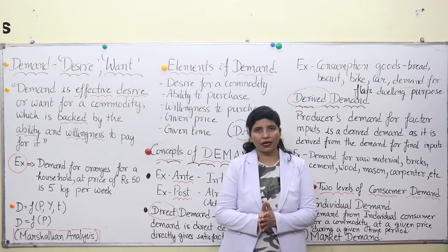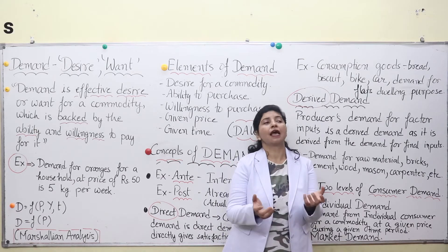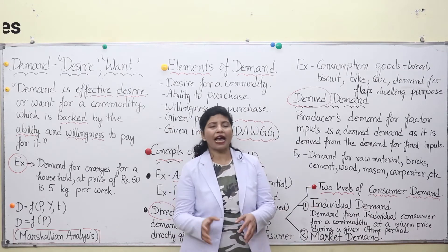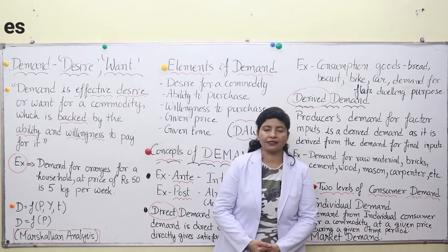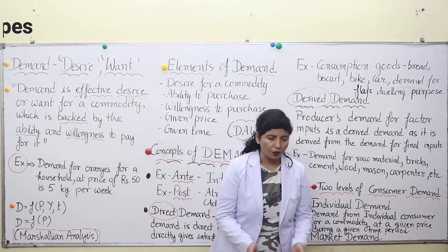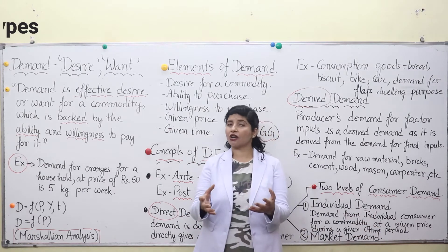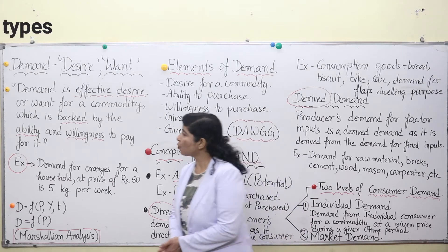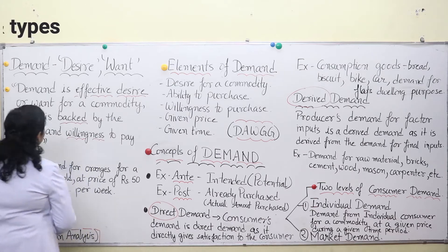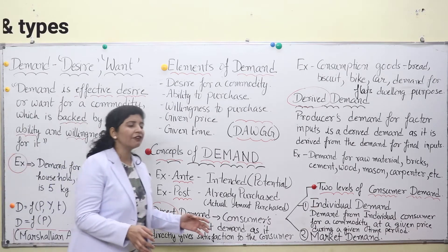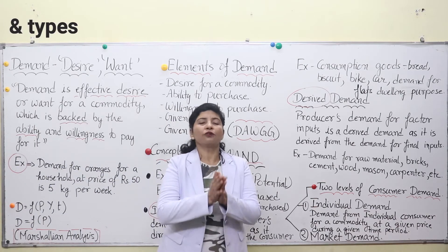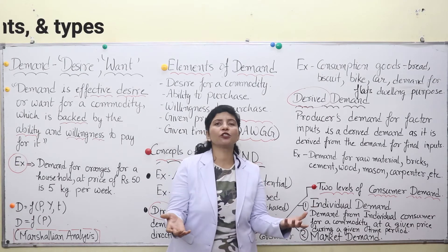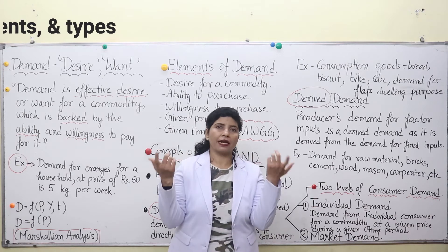So what is demand normally? We call it desire or want — like 'I want a Ferrari' or 'I want a yacht.' We have an immense amount of desires in this world, but are we able to fulfill them all? No, because our desire is not effective demand — in fact, that is not demand at all. So what is demand? Let's discuss.